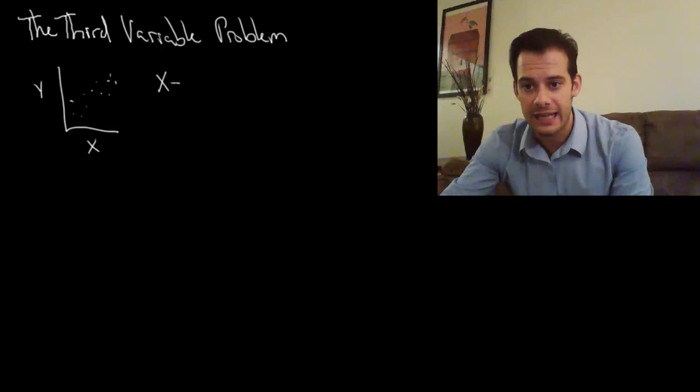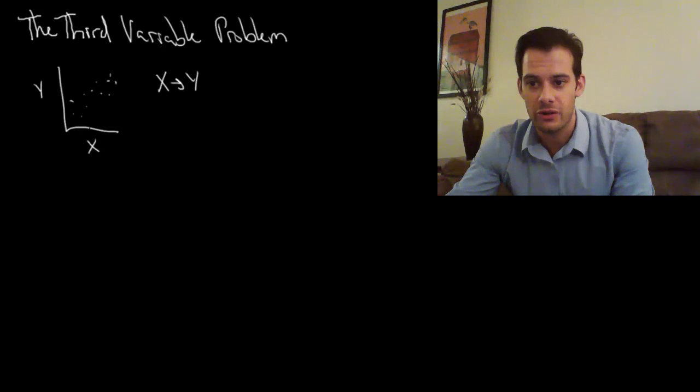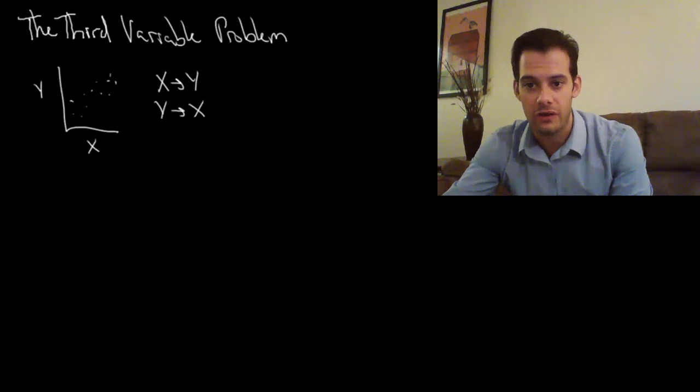It could be the case that x is causing y, so as x increases that causes y to increase. It could be the case that y causes x, so as y increases that causes x to increase. Or the third variable problem is that it could be that z causes changes in x and y.